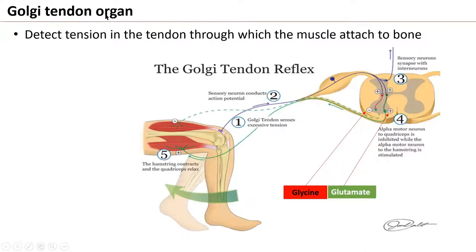Now, the Golgi tendon organ. These receptors have sensory neurons attached to this organ. They are present in the tendon of muscles. Muscles attach to bone through the tendon — the muscle attaches to the tendon, and the tendon attaches the muscle to the bone.